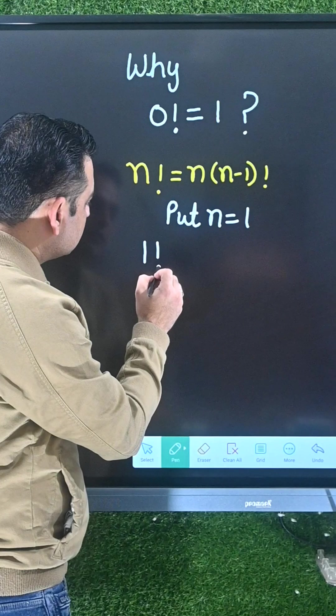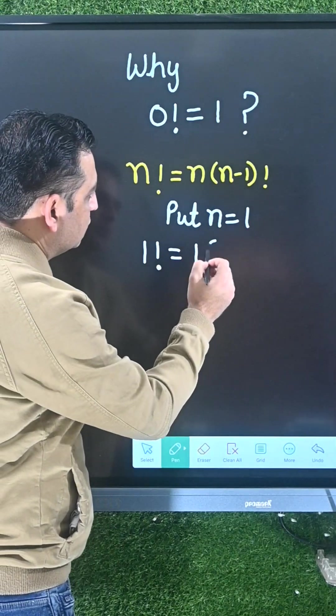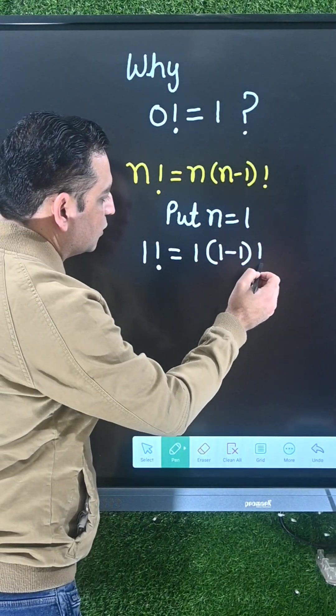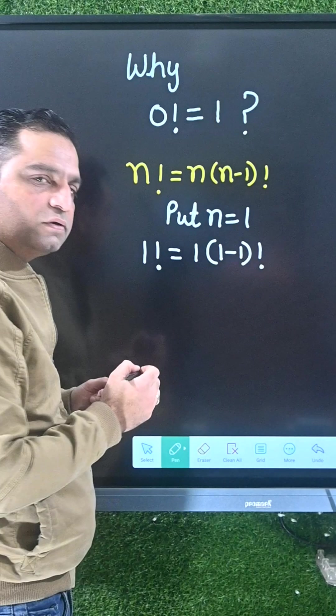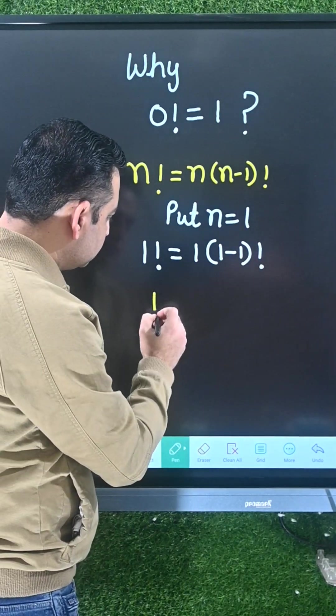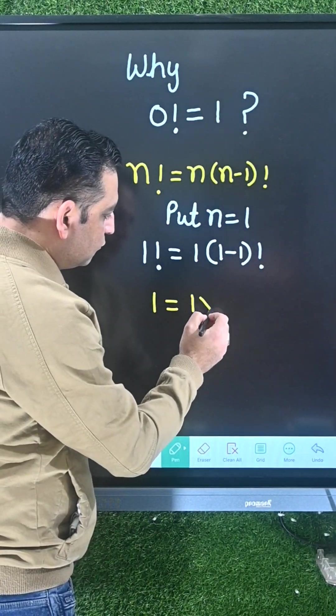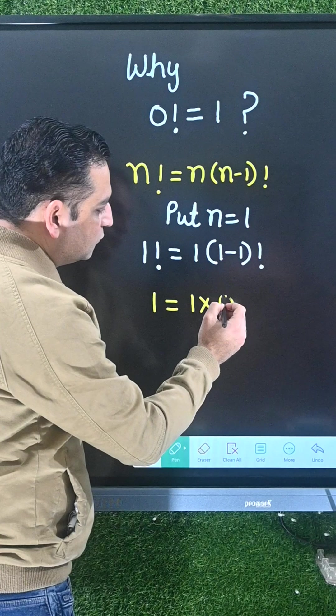You will get 1 factorial on the left side. 1 multiply (1-1) factorial. 1 factorial has a value of 1 itself, and 1 multiply (1-1) is 0 factorial.